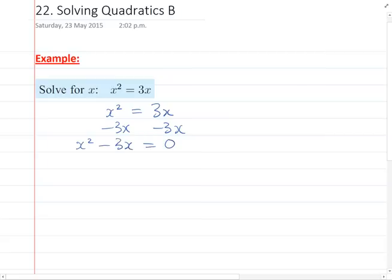So now what I want to do is factorize this. And so I'm going to take out a common factor of x and write it as x minus 3 equals 0.